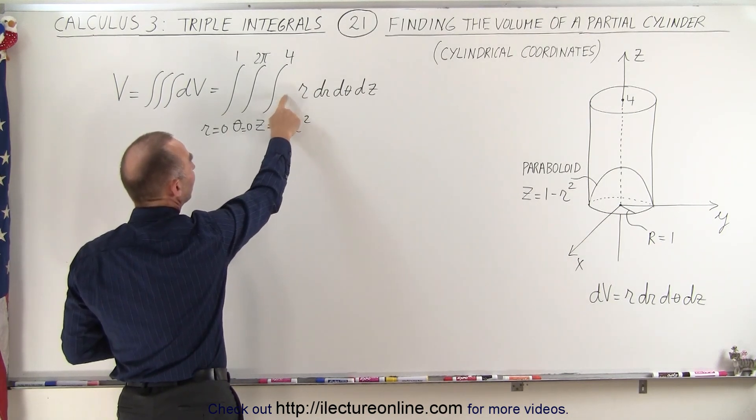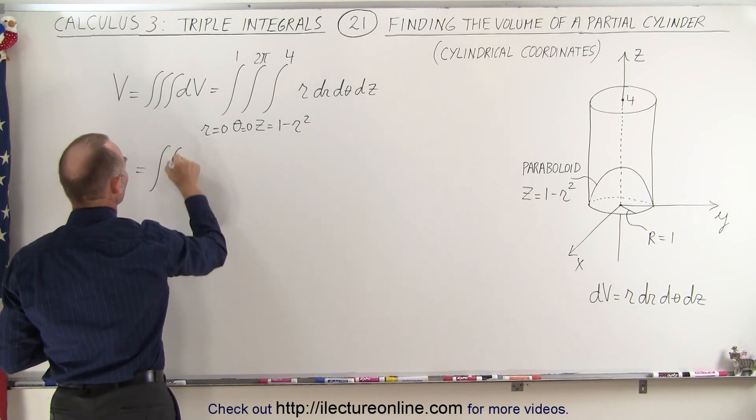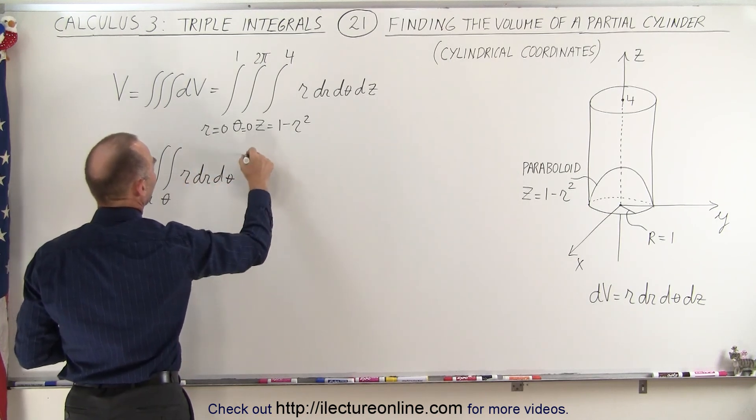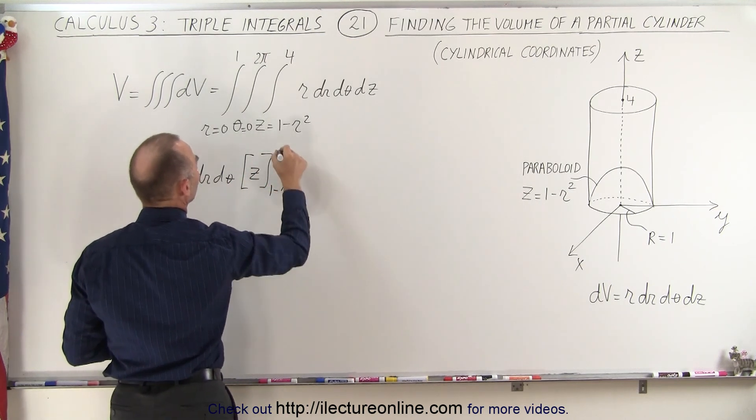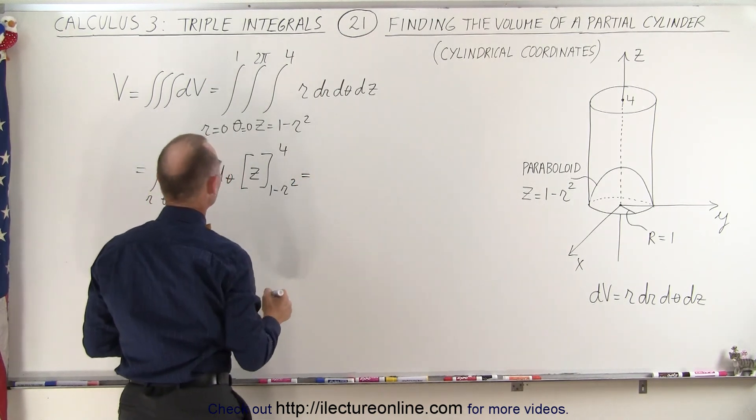So let's go ahead and do that and let's start with the dz. When we integrate dz, we get z. So this is equal to, we still have a double integral left over θ and over r. We have the r dr dθ left. And then the dz becomes z evaluated from 1 minus r squared to 4. And so when we evaluate those limits, we get the following.